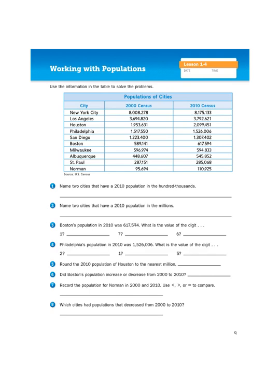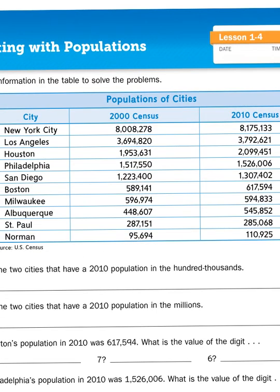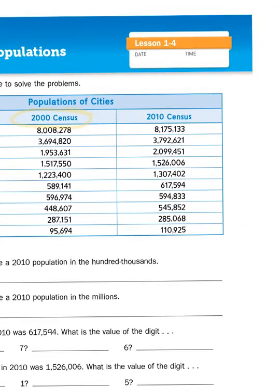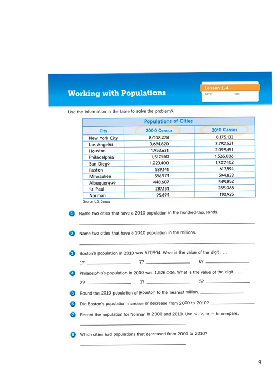We are on page 9. It says use the information in the table to solve problems, and as you can see there are several cities listed. In 2000 there was a census taken of how many people lived in the area, and then 10 years later it was done again. Every 10 years our country goes about the task of counting people in cities, states, and the country. It's 2020 and the census has been going on the last several months — this is how we know who lives where.